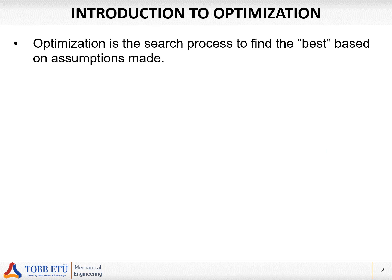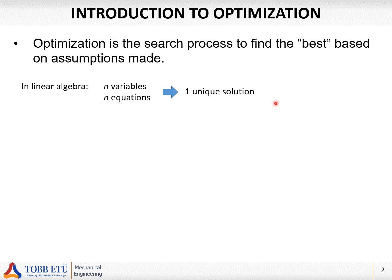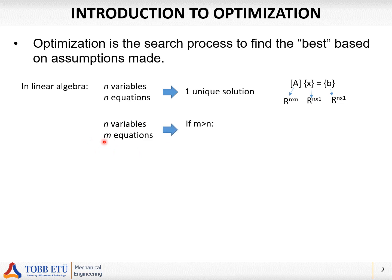Let's start with the introduction to optimization. Basically, optimization is the search process to find the best solution based on assumptions. In linear algebra we have n variables and n equations, and we will have one unique solution. We will learn how to solve these linear algebra equations in the next section, chapter 9. For now, as just an introduction: we have a matrix with n equations and n variables, giving us one unique solution.